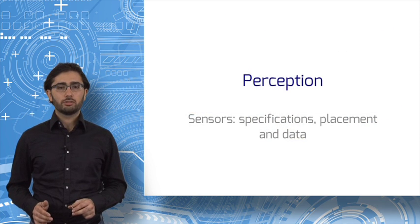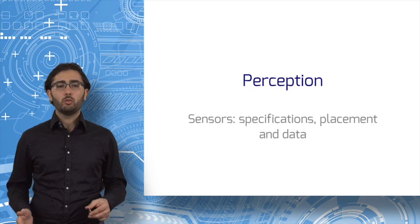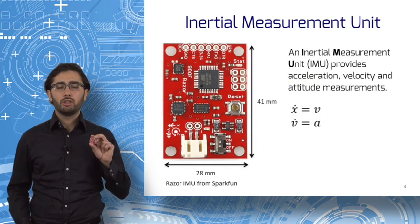Our topic in perception is sensors. What are the sensors we use? Where are they placed on the car? And what data do they give us? First off, the Inertial Measurement Unit or IMU.